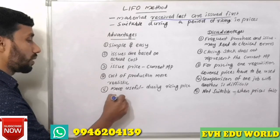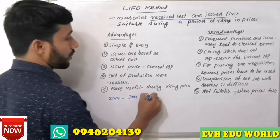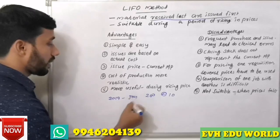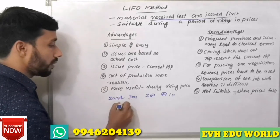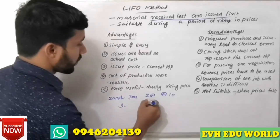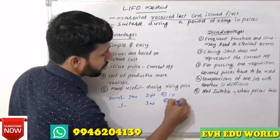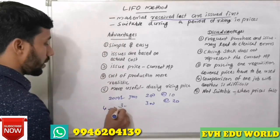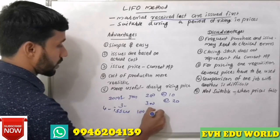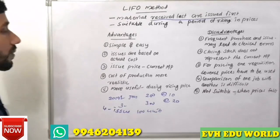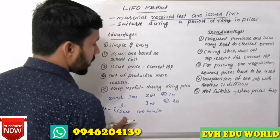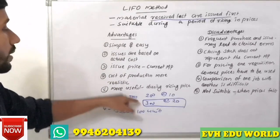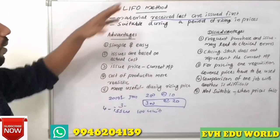For example, on January 1st, 200 units of material are received at Rs.10. Then next, 300 quantity is received at Rs.20. If there is an issue of 100 units, under LIFO method we use the last received price first. This is the LIFO method.